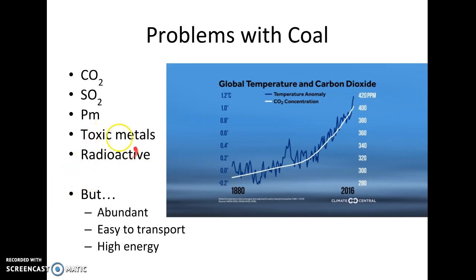There are also toxic metals in coal — it's not just a pure hydrocarbon. Toxic metals include mercury, which we've already talked about because it biomagnifies. When we talk about mercury biomagnifying in the food chain, its primary source is the burning of coal. When we combust coal, it releases mercury that makes its way into our waterways and can biomagnify up the food chain. Another problem with coal is that it's radioactive — being a sedimentary rock, it gives off radiation as it sits in piles or is burned, which can cause problems with cancer.